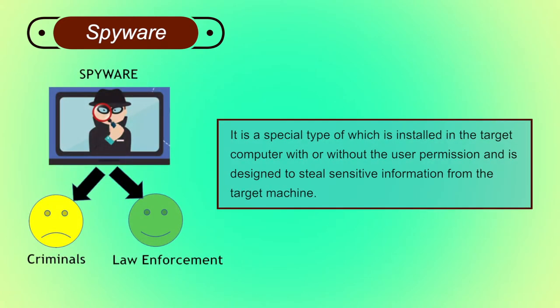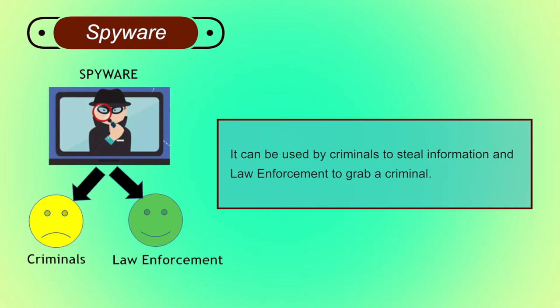Spyware is a special type that is installed on the target computer with or without the user's permission and is designed to steal sensitive information from the target machine. It mostly gathers the browsing habits of the user and sends it to a remote server without the knowledge of the owner. A keylogger is the best example of spyware — it can be used by criminals to steal information and also by law enforcement to catch a criminal.